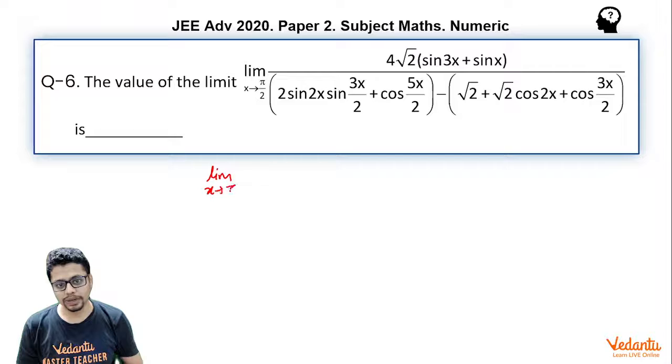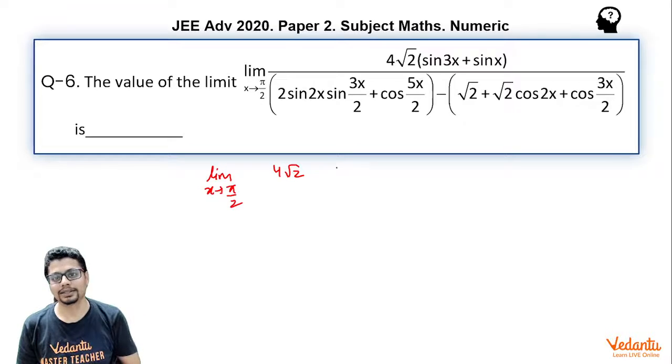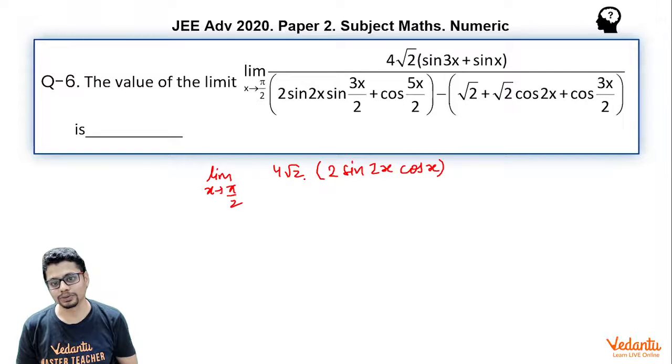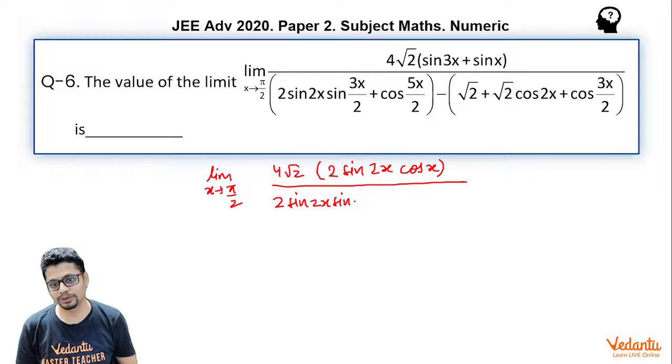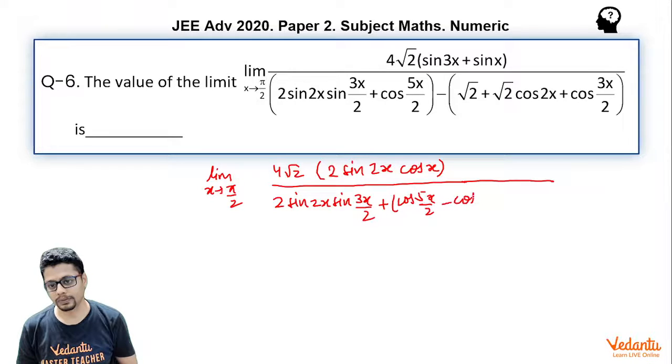So limit x tending to π/2, 4√2 is a constant which you can let it be just like that. Sin c plus sin d is 2 sin((c+d)/2) cos((c-d)/2). Now here I can let 2 sin 2x sin(3x/2) be just like that and I can club cos(5x/2) minus cos(3x/2).